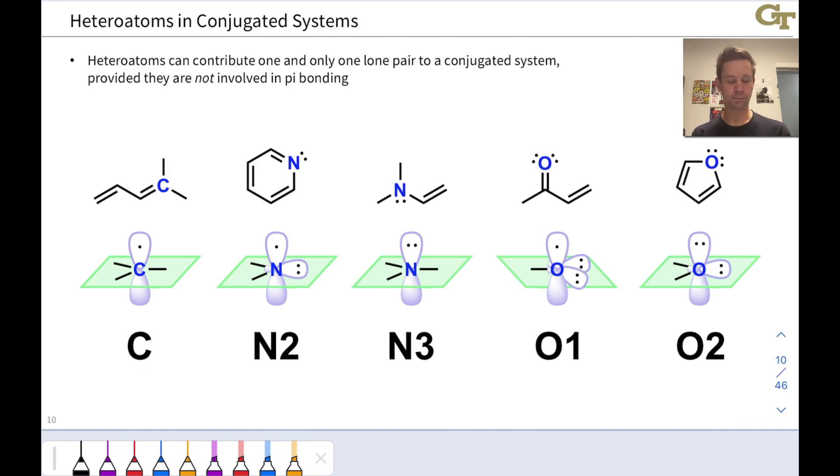And the nomenclature here with C, N2, N3, O1, and O2, we're going to make use of to distinguish between these different types of atoms. Particularly, N2 and N3 atoms are very different and O1 and O2 atoms are very different in terms of their orbital occupancy, how many electrons they're contributing to a given conjugated system.